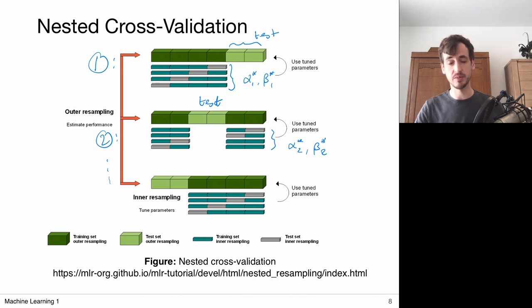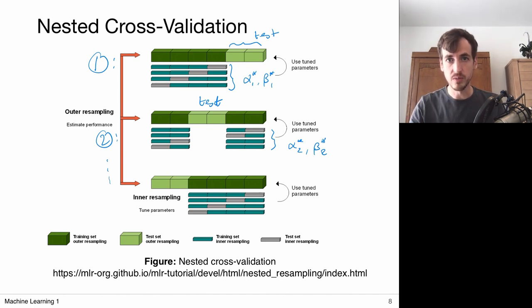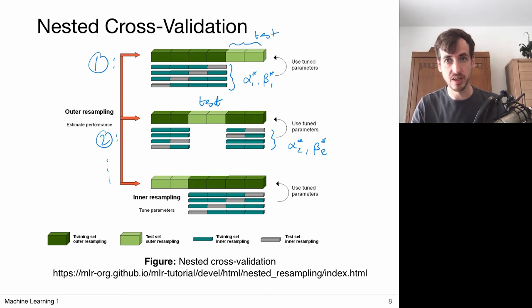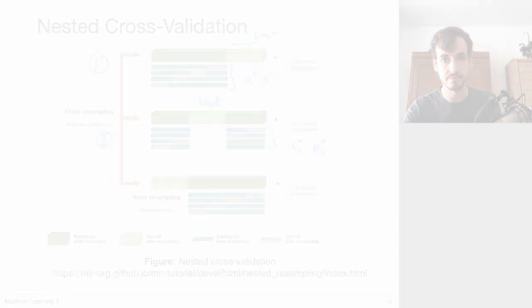The whole point of nested cross-validation is to get a reliable estimate of the generalization performance. If you build a machine learning framework for a customer, these test errors are quite representative of how the model is going to perform, and you can add uncertainty by looking at variations among all the test sets. You could still retrain the final model using all available data with the best hyperparameters found, but for reporting generalization performance, the nested cross-validation error is the most accurate estimate you can provide.